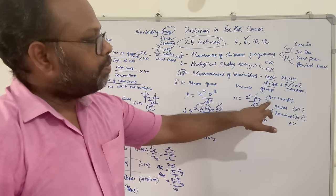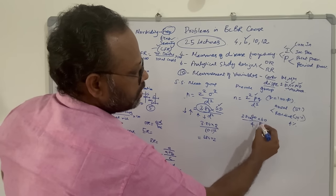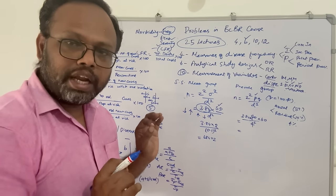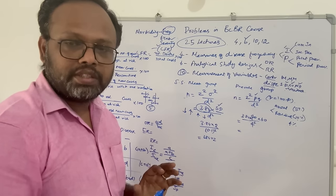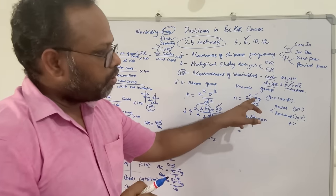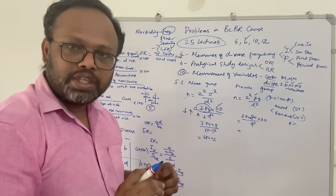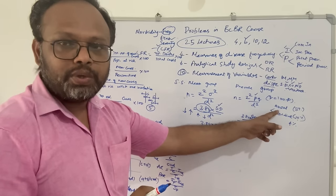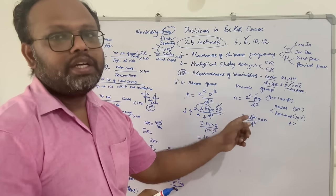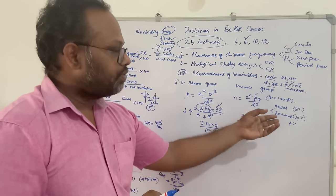To summarize: in any sample size question for prevalence, look at the prevalence of the disease and substitute p directly. q is 100 minus p. For precision: if absolute precision is given, substitute directly; if relative precision is given, it is relative to the prevalence — calculate the actual value and substitute. That is sample size calculation for means and for proportions.